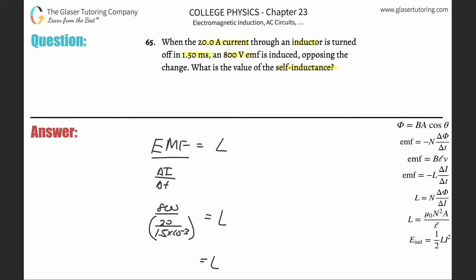So 0.06... well, I'll get it right eventually. It's going to be 6.00 times 10 to the minus 2, and that is in terms of henrys, or about 60 millihenrys, depending on whatever unit you want to call it.